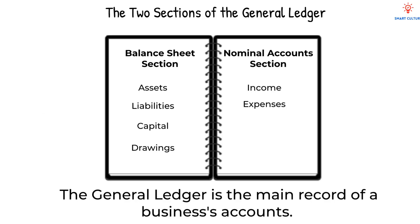Let's try a quick activity. Which section does each of these accounts belong to — balance sheet or nominal? Wages, loan, stationery, current income, and drawings. Think about what each account represents before you decide. Wages is an expense, so that goes into the nominal section. Loans are liabilities and will go into the balance sheet section.